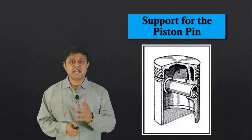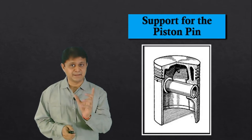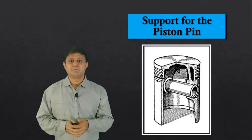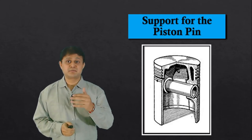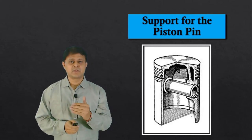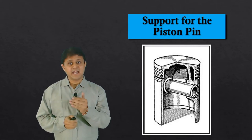The seventh and the last consideration is sufficient support for piston pin. First of all, piston pin is the part of the piston which connects piston and connecting rod. Piston pin is located in piston boss on which small end of the connecting rod is attached.